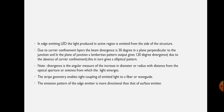In the edge emitting LED, the light produced in the active region is emitted from the side of the structure. Due to the carrier confinement layers, the beam divergence is 30 degrees in the plane perpendicular to the junction. In the plane of the junction, the Lambertian pattern output gives 120 degrees divergence.